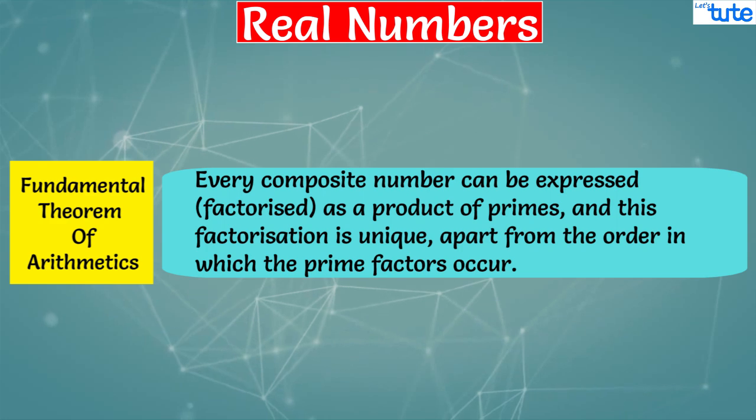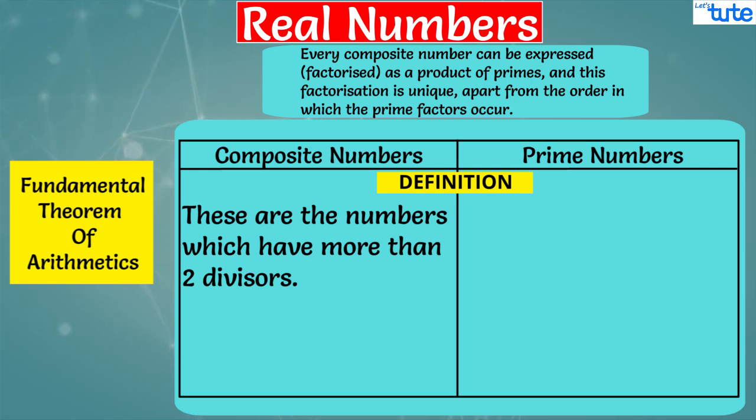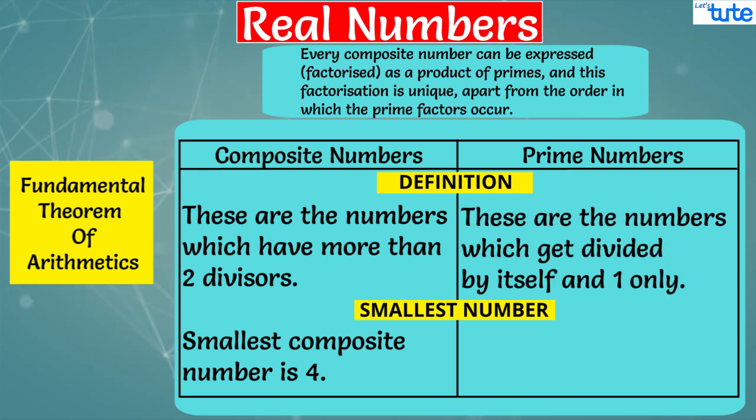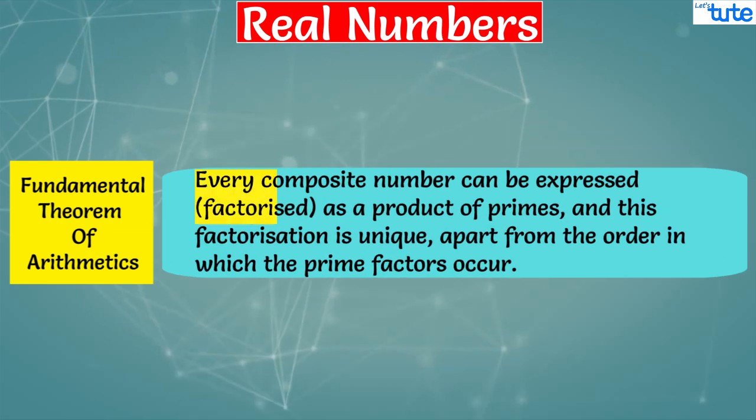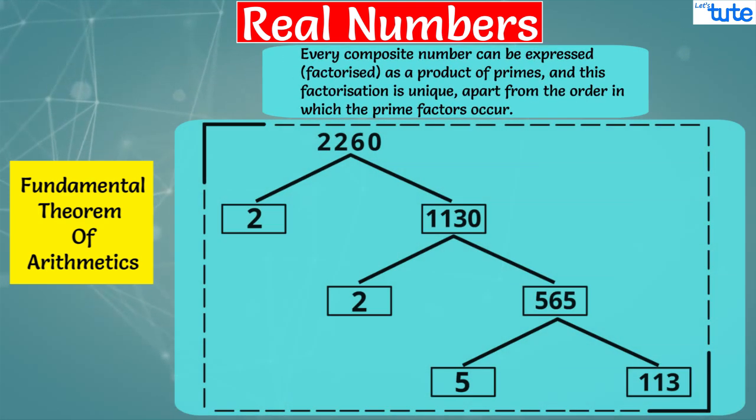Let's break this and understand this. Friends, first let's revise what is composite number and what is prime number. Composite numbers are the numbers which have more than two divisors. The smallest composite number is 4. Whereas prime numbers are the numbers which get divided by itself and one only, and the smallest prime number is 2. The first statement states that every composite can be expressed as a product of primes. This means we can write the product or factorize composite number in primes. For example, 2260. Here we have factorized 2260 as 2 × 2 × 5 × 113 as the product of primes. So we have proved the first statement that every composite number can be expressed as product of primes.